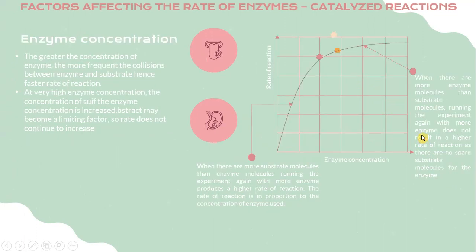The third factor is enzyme concentration. The greater the concentration of enzyme, the more frequent the collisions between enzyme and substrate, hence a faster rate of reaction. At very high enzyme concentration, the substrate may become a limiting factor, so the rate does not continue to increase. When there are more substrate molecules than enzyme molecules, running the experiment again with more enzyme produces a higher rate of reaction, and the rate of reaction is proportional to the concentration of enzyme used.